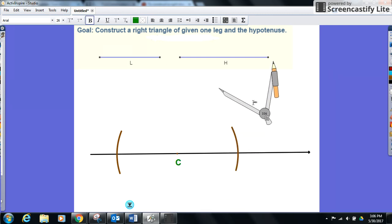So the distance from C to each arc is length L. Now what we'll do is go to our hypotenuse length and measure that with our compass. So we will open up our compass to length of H.